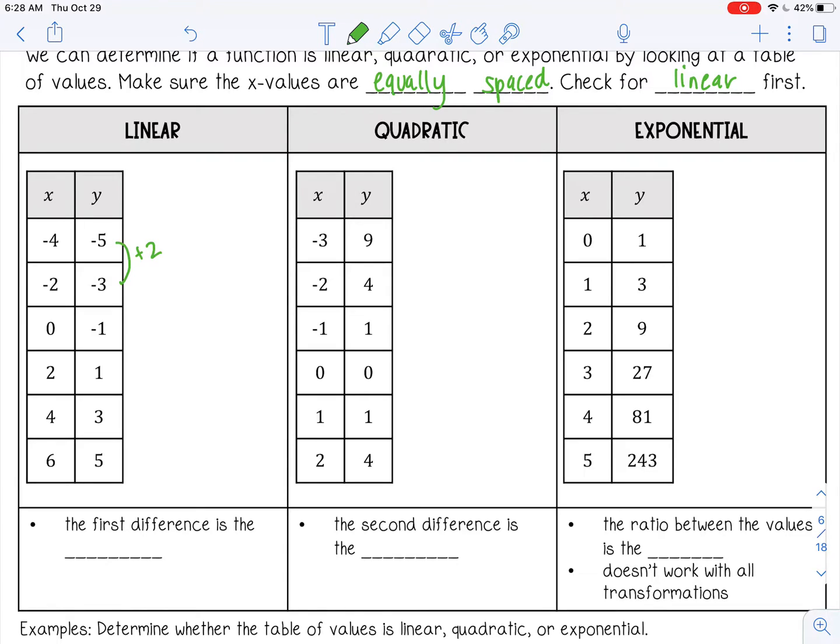And then from negative 3, negative 2, negative 1, I'm adding 2. And then negative 1, 0, 1, I'm adding 2. From 1, 2, 3, I'm adding 2. And then from 3 to 5, I'm adding 2.